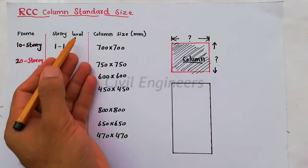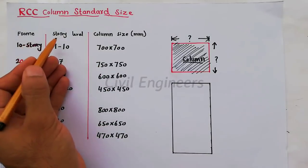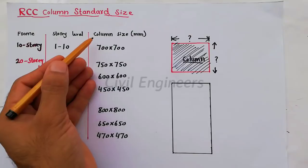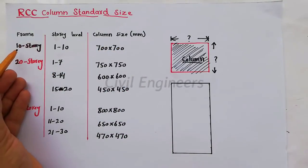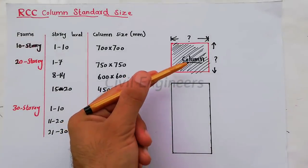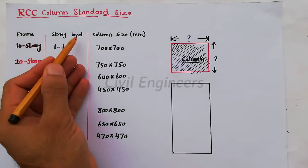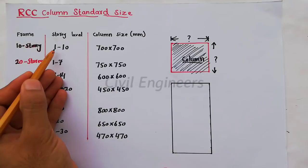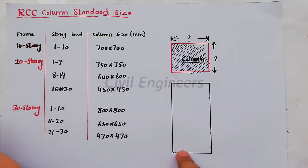What are the standard sizes for RCC columns for first floor, second floor, third floor, etc., for different story levels? In the first column we have frame, second is story level, and third is column size in millimeters. Frame from first to tenth story, for a 10-story building, what will be the size of the RCC column?